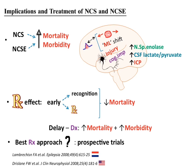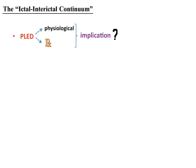We do not know whether all NCS or NCSE need to be treated — more prospective trials are needed. There are certain conditions where treatment remains controversial, particularly those involving periodic epileptiform discharges (PEDs). When patients are put on continuous EEG, discharges appear that may be physiological or pathological and fall under categories of periodic lateralized epileptiform discharges (PLEDs) or global periodic epileptiform discharges (GPEDs).